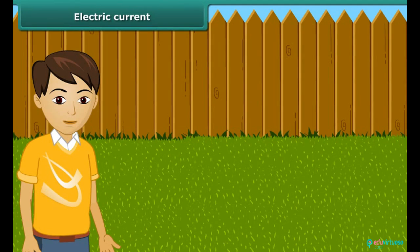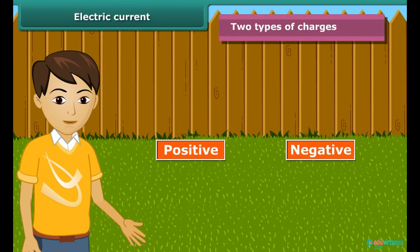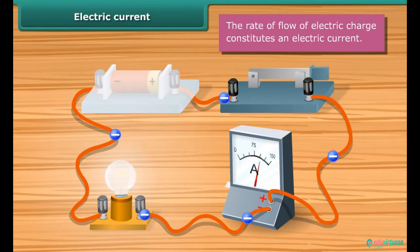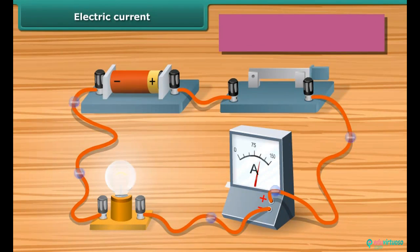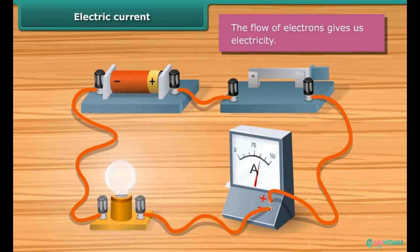We have just studied about electric charges and the forces they exert on one another. We have learned there are two types of charges: positive and negative. When charges transfer from one body to the other, the bodies are said to be charged. The moving or flowing charges produce an electric current. An electric current consists of a movement of negative charges, that is electrons. The flow of electrons gives us electricity. Electric current is measured by ammeter.